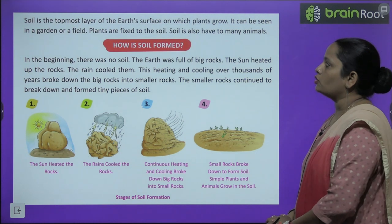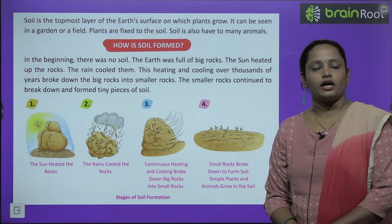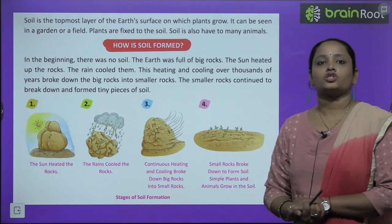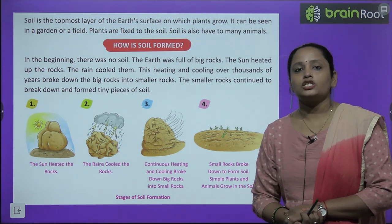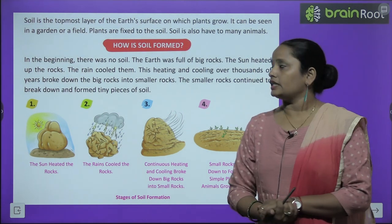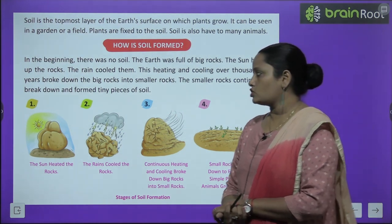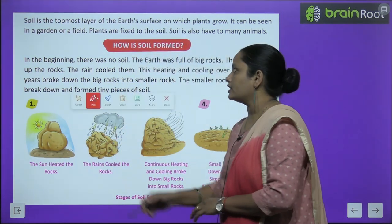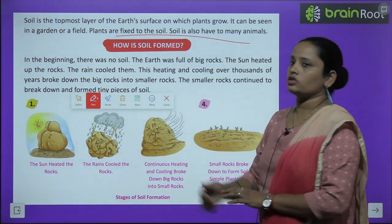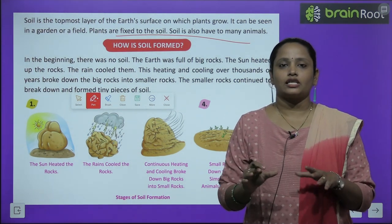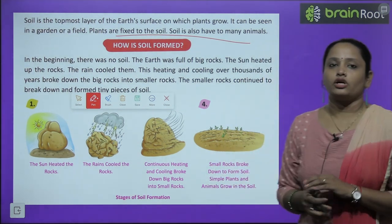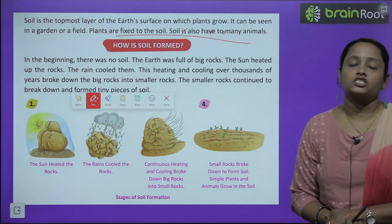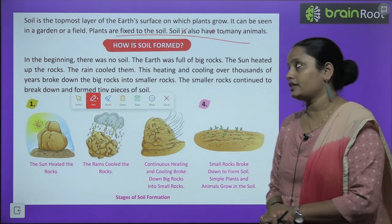Soil is the topmost layer of the earth's surface — earth ke surface ka sabse oopar wala layer — on which plants grow. It can be seen in the garden or in the field. Plants are fixed to the soil, meaning they are joined to it and cannot move. Soil also has many animals and insects living in it.